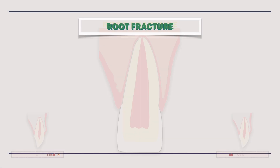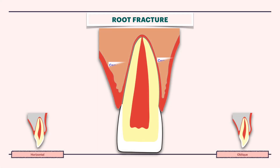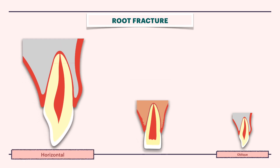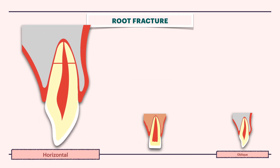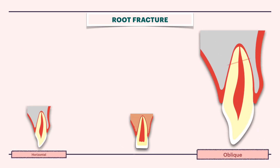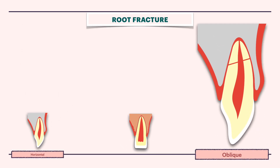Basically, root fracture involves fracture of the cementum, dentine and pulp. It may be a horizontal fracture or it may present as an oblique fracture.